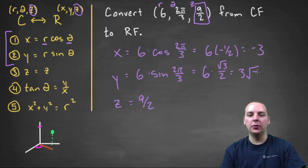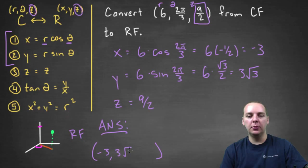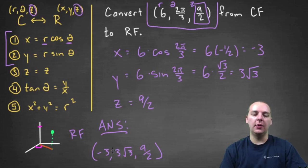So we're done, here's our final answer. In rectangular form, the point is negative 3, 3 root 3, 9 halves. This represents the same point as this one right here, but in rectangular form as opposed to cylindrical form.